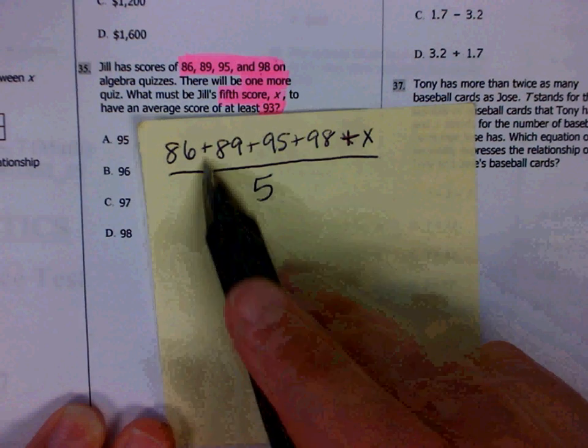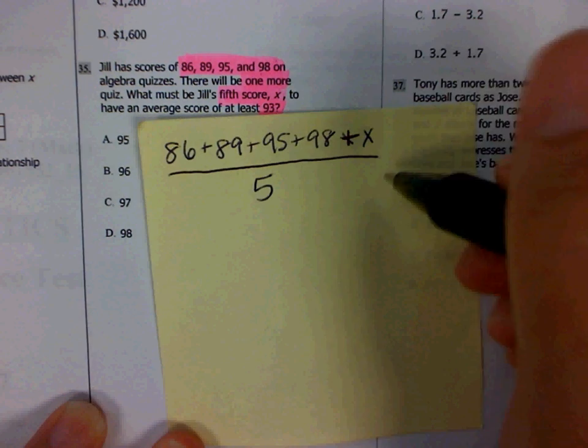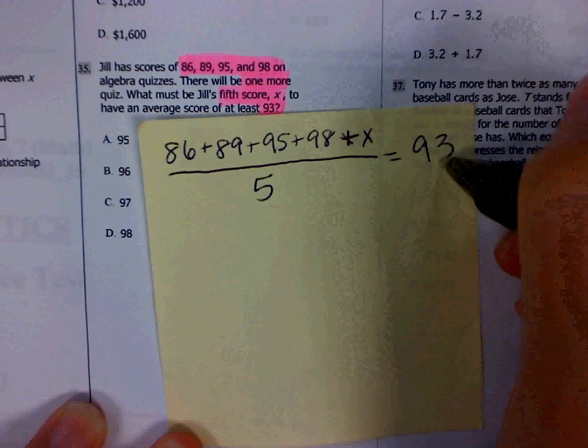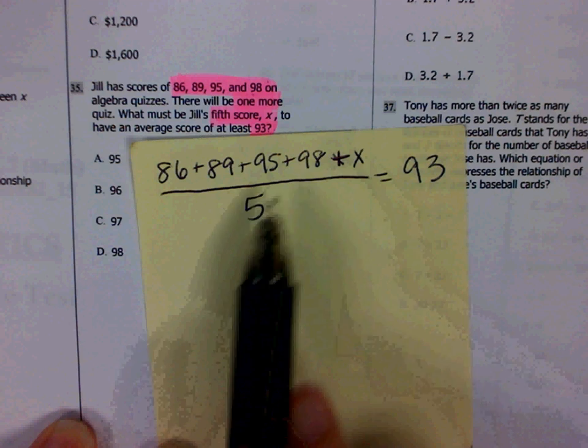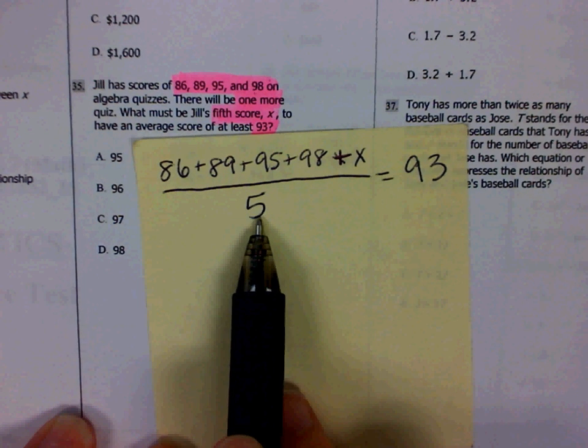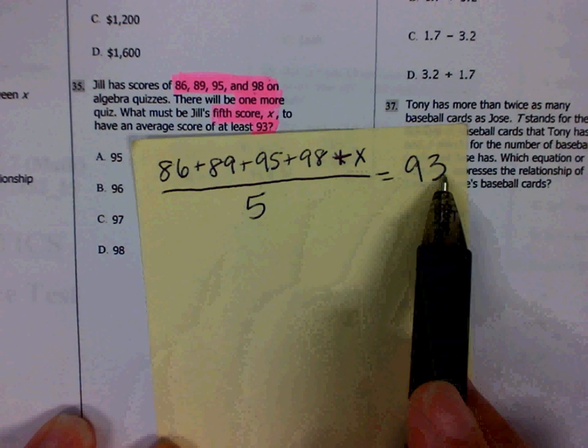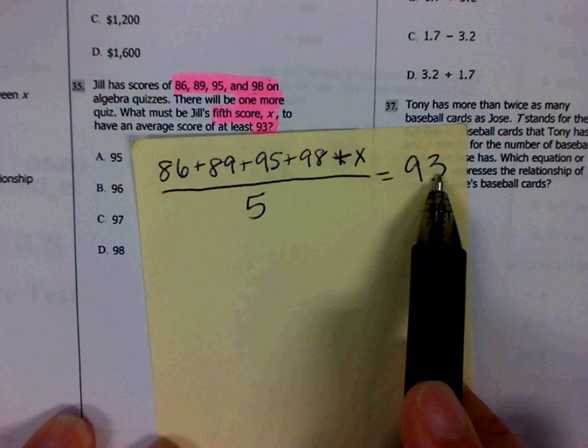I know that I want my average to be 93, so I am going to set up an equation where I take the sum of all the numbers, including my X, divide it by how many there are, and there are five. That should give me 93, which is going to be my average.